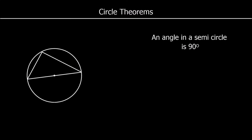An angle in a semicircle is 90 degrees. Here we've got a diameter of the circle — we could also say an angle from a diameter is 90 degrees. We've got a diameter here, so the angle it makes is a right angle, a 90 degree angle.